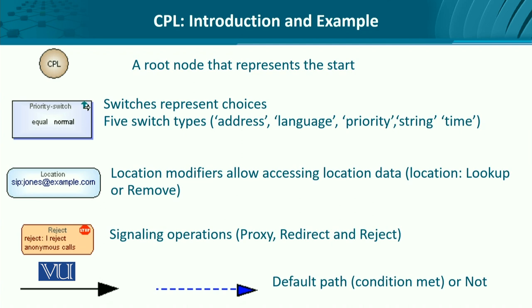These conditions could be met. For example, if the address information is equal to the one stored in the database, then it is given normal priority. We also have the location node, which allows the location address to be accessed and subsequently reaching out to a certain user. Then some action has to take place — these are known as signaling operations. Should the call be proxied, should it be redirected, or should it be rejected?